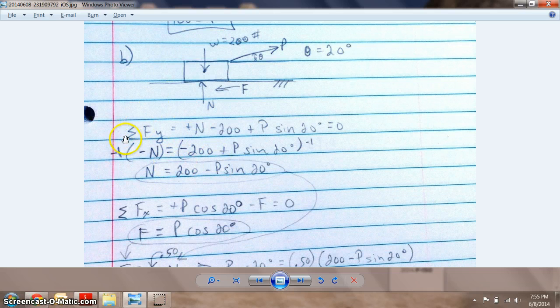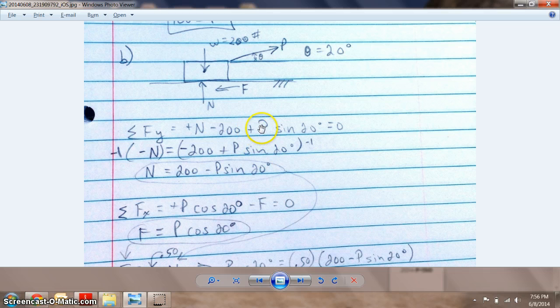We're gonna do the same methods. Summation of forces in the Y. The difference this time is we take our positive N because it's going up, our negative 200 because the weight is coming down, and then there's a little bit of a Y component here. When we're dealing with Y, remember it's always the sine of the angle.